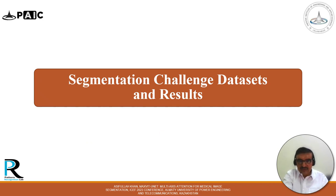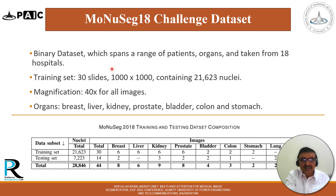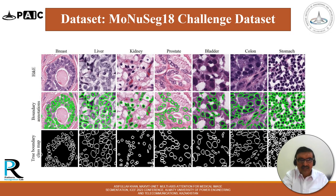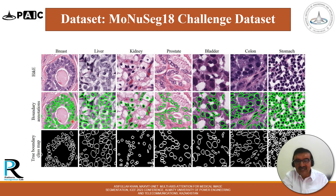We used two recent segmentation challenge datasets: ManuSeg18 and ManuSeg20. ManuSeg18 is a binary dataset spanning a range of patients and organs, taken from 18 hospitals. The training set consists of 30 slides of 1000×1000 pixels containing about 21,600 nuclei. Magnification is 40× for all images, and the organs are breast, liver, kidney, prostate, bladder, colon, and stomach. The H&E stained original images, boundary annotations, and true boundary class maps are shown, with the annotations provided by pathologists as ground truth for training. Once trained, the network gives the nuclei area without needing annotations.